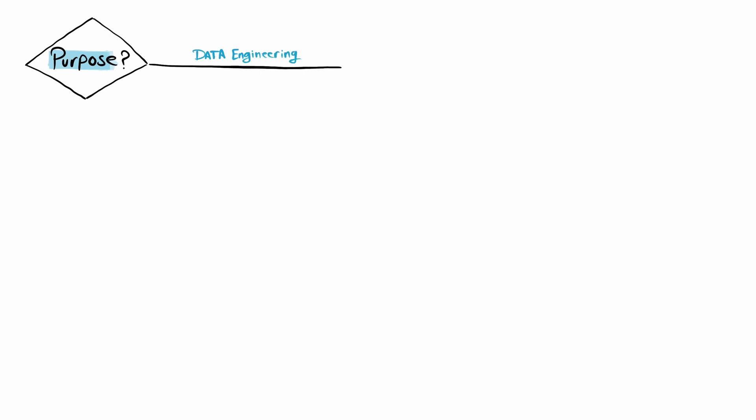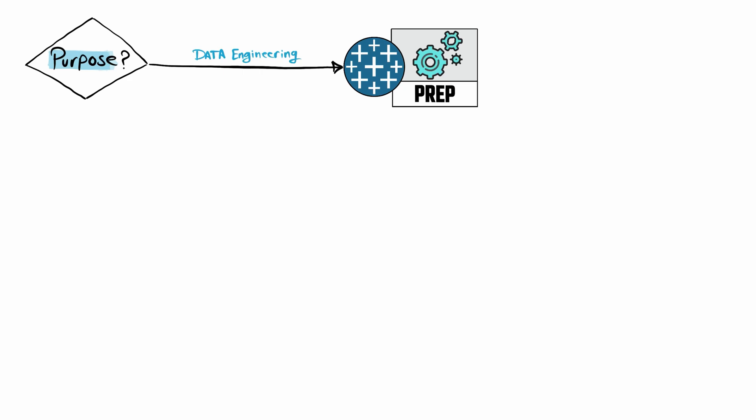With that we have a good overview of the three Tableau products for development. Now comes the question: when to use which product? Let me guide you through my decision-making process using a flowchart. First, we ask: for which purpose? If we need a product for data engineering, it's easy — we have only one Tableau product, and that is Tableau Prep.